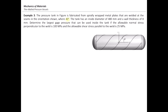The tank has an inside diameter of 480 millimeters and a wall thickness of 8 millimeters. Determine the largest gauge pressure that can be used inside the tank if the allowable normal stress perpendicular to the weld is 100 megapascal and the allowable shear stress parallel to the weld is 25 megapascal.